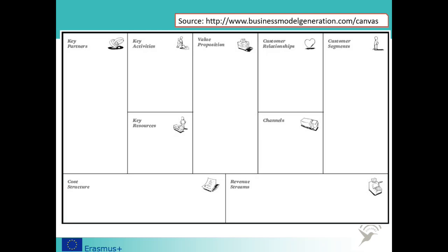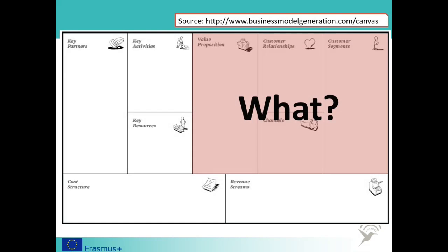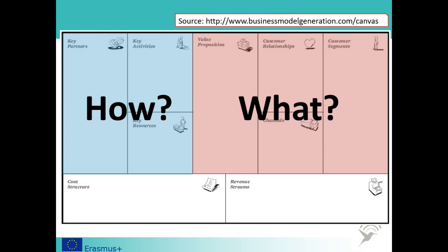Together, these address what your business is going to provide, how it is going to provide it, and the money that will be going in and out of the business in the process. We'll now look more closely at each of those building blocks so that you can see how they can be used to map out your business idea.